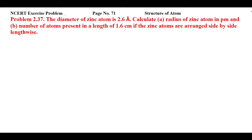Students, this is MCRT exercise problem 2.37 from page number 71 of Structure of Atom. Let us read this statement. The diameter of zinc atom is 2.6 angstrom. Calculate: first, the radius of zinc atom in picometer; and second, the number of atoms present in a length of 1.6 centimeter if the zinc atoms are arranged side by side lengthwise.